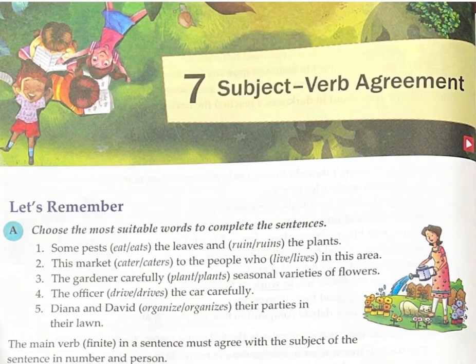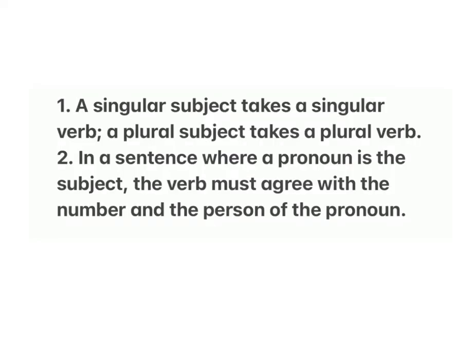Lesson 7: Subject-Verb Agreement. Rule 1: A singular subject takes a singular verb; a plural subject takes a plural verb. Rule 2: In a sentence where a pronoun is the subject, the verb must agree with the number and the person of the pronoun.